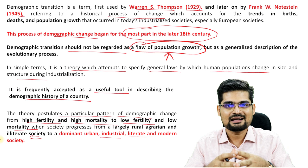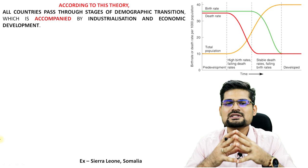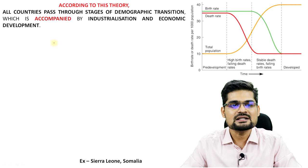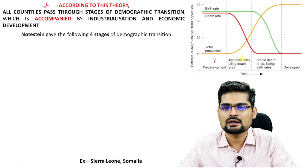According to this theory, all countries pass through various stages of demographic transition, accompanied by industrialization and economic development. Notestein gave four stages — four regimes of population transition. The first stage is called the pre-developmental stage: the stage of high birth rate and high death rate.